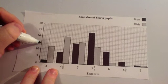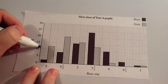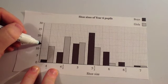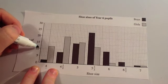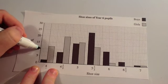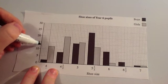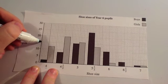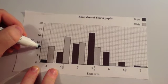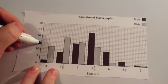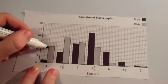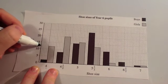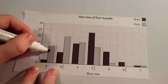It's important to check what each one of these lines is worth. It's going from 10 up to 15 and there are 5 lines, so each one is worth 1 — that's 11, 12, 13, 14, 15. So this bar is going across to 12.